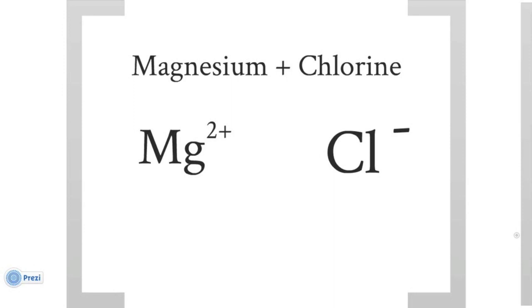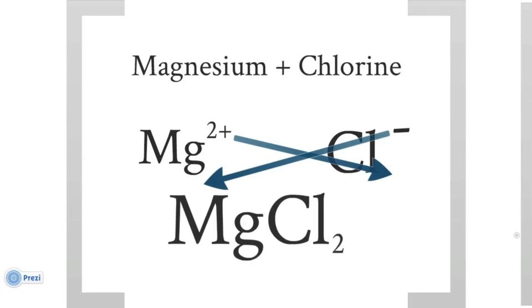Magnesium and chlorine, magnesium with a charge of 2 plus, chlorine with a charge of minus 1, and we cross the charges, and we get MgCl2, magnesium chloride.